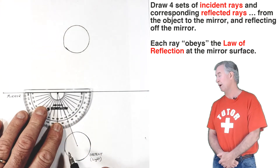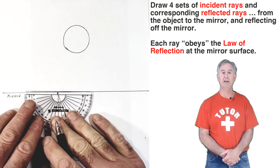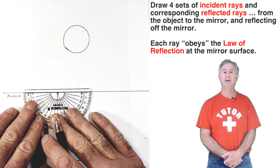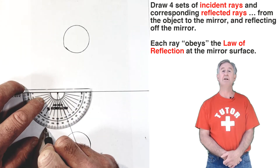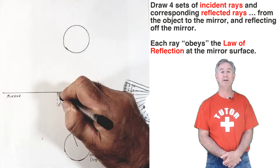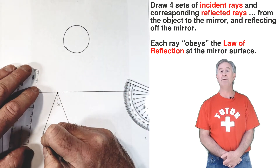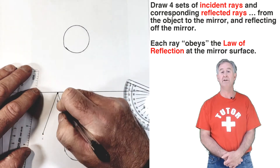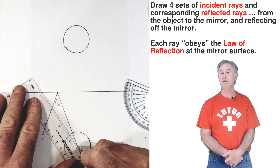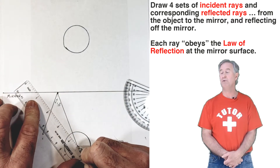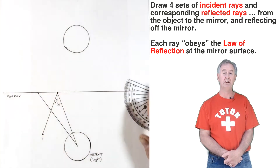I need a protractor and a straight edge to do that. The angle of incidence equals the angle of reflection. So at the point of contact of each incident ray with the mirror, I'm going to draw a normal line — a perpendicular line to the mirror at the point of incidence. Then I'm going to measure the angle of incidence and draw the reflected ray on the opposite side of that normal line at the same angle of reflection.